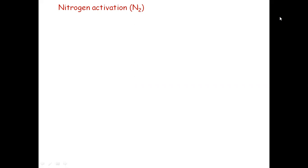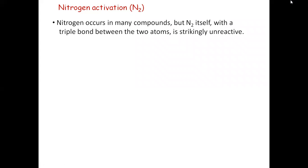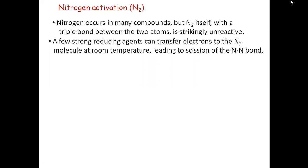Similarly, nitrogen also plays a very important role in the agricultural field, because effective fertilizers contain nitrogen-based compounds such as ammonium and nitrates. Nitrogen can occur in many compounds. But the N2 molecule has a triple bond — bond order is three — and is highly unreactive, present in the environment around us.